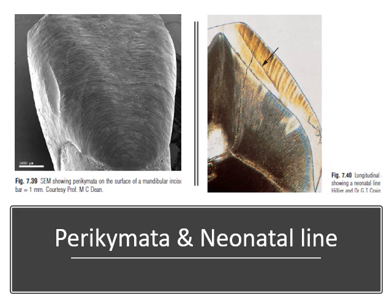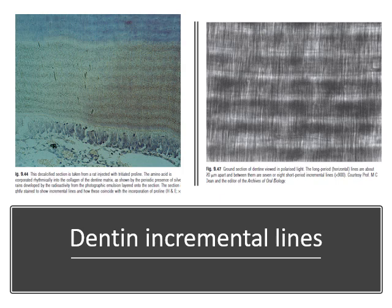Another important incremental line seen at birth is the neonatal line, which is visible in both enamel and dentine. All primary teeth being formed at the time of birth will show this neonatal line, as well as all four first permanent molars.